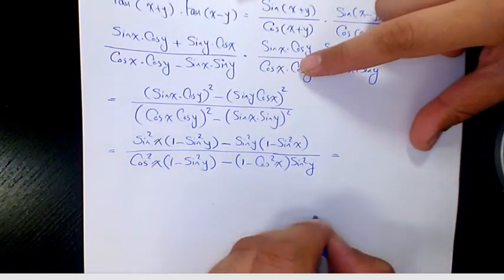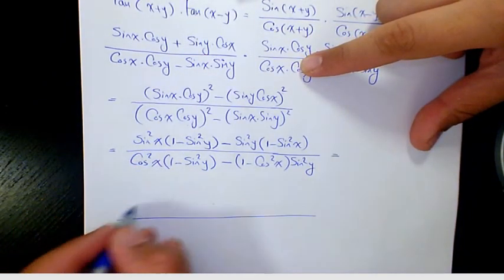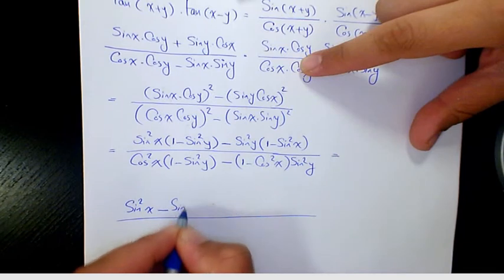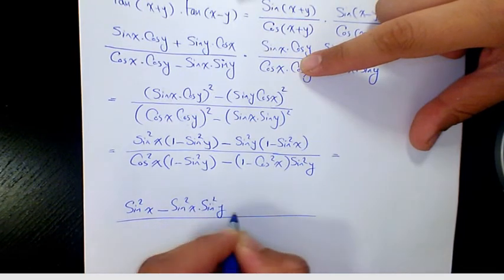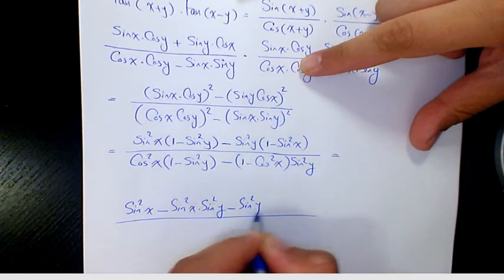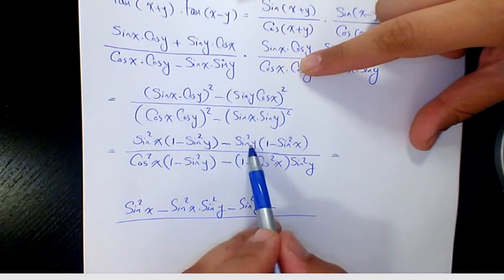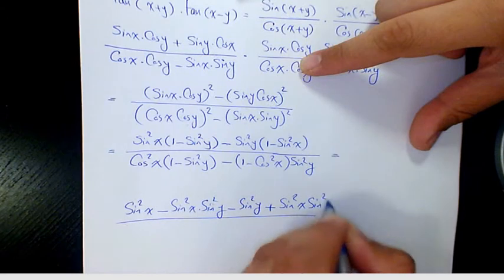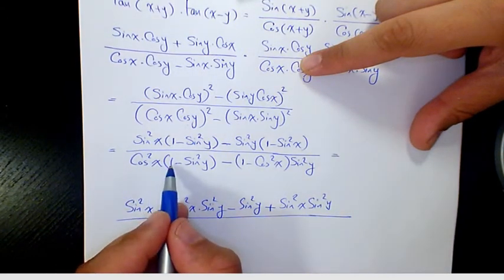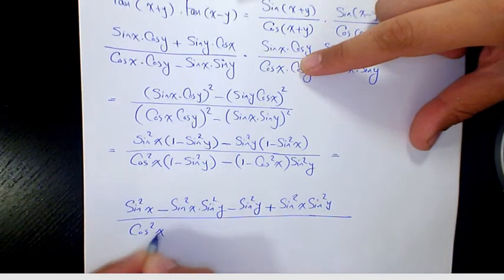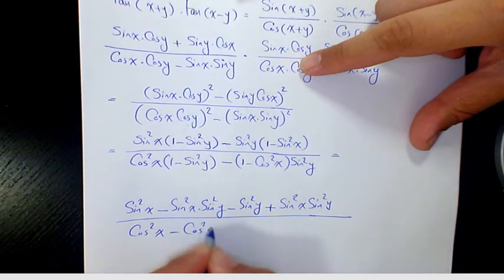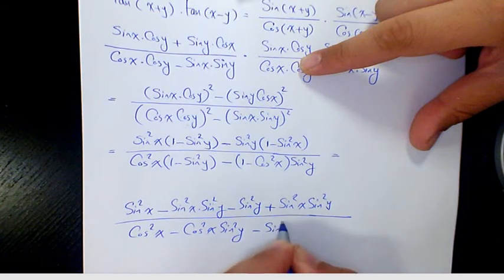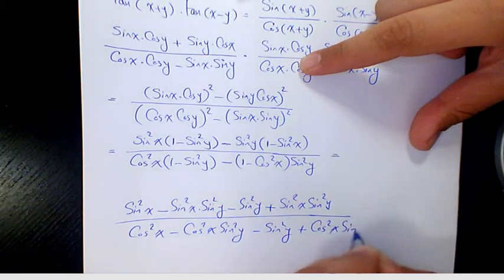Then we expand it: sine squared(x) times 1 is sine squared(x), minus sine squared(x) times sine squared(y), minus sine squared(y) times 1, plus sine squared(x) times sine squared(y). On the denominator: cosine squared(x) minus cosine squared(x) sine squared(y), minus sine squared(y) plus cosine squared(x) sine squared(y).